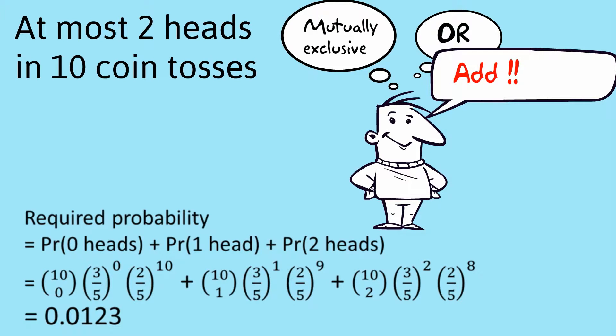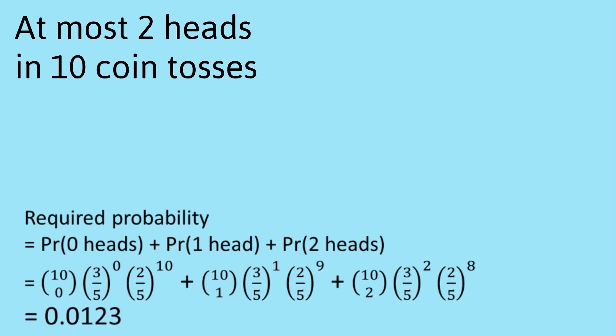So I've worked out the probabilities in the way I did for question one. But now we've got ten coin tosses. And I've worked it out for zero heads, one head and two heads. And I've added them up. And if you want, you can express the answer in decimal form to as many decimal places as you want, which I've done there.